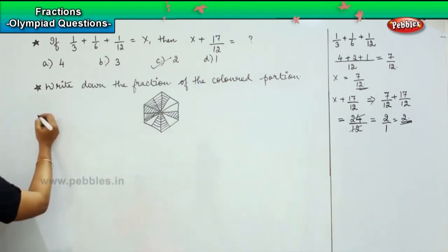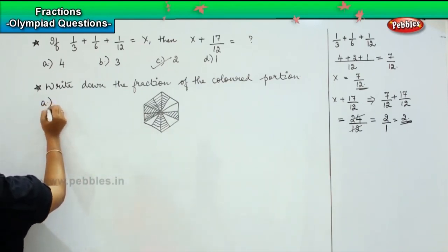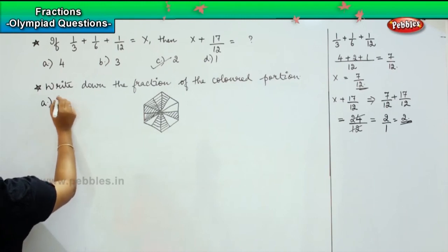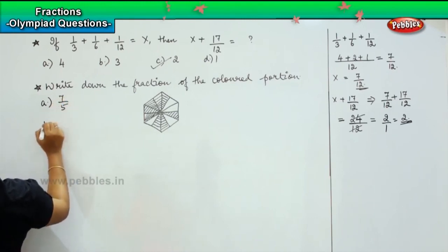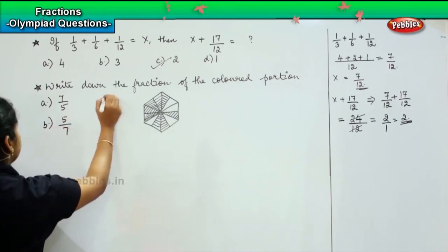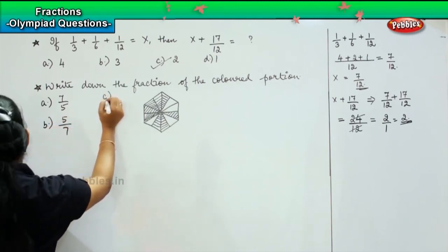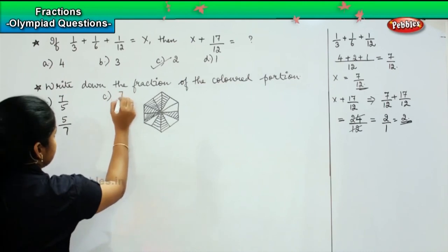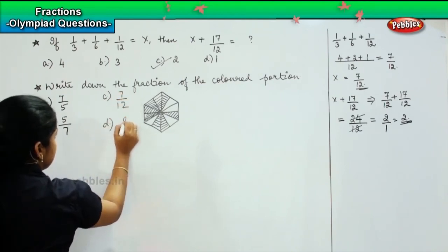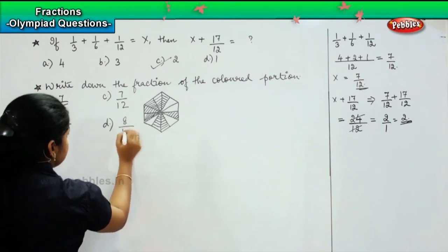The options given are: option A - 7/5, option B - 5/7, option C - 7/12, and option D - 8/12.